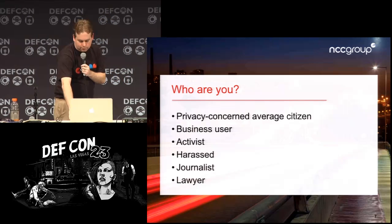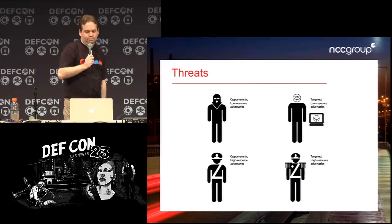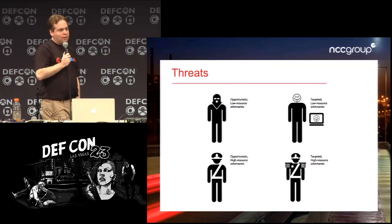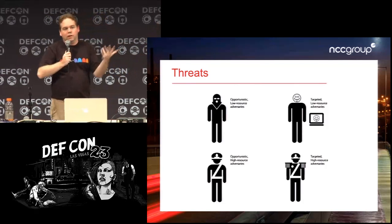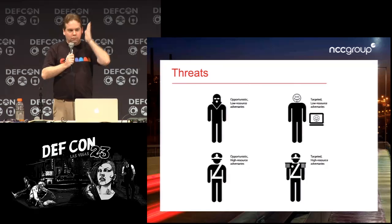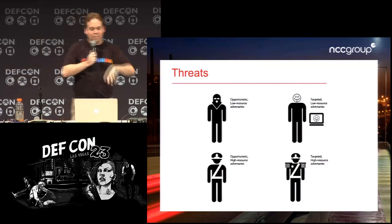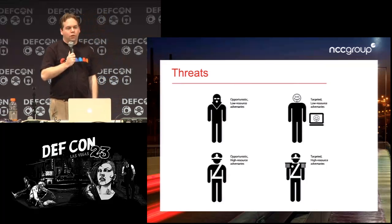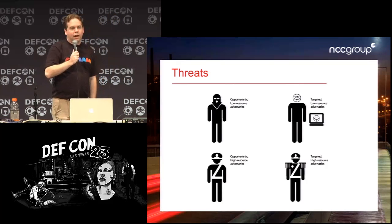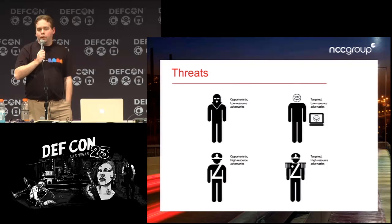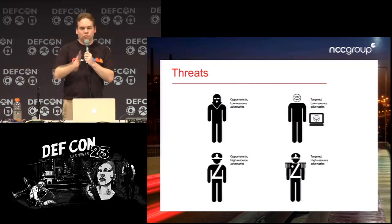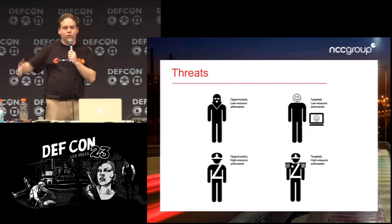Once we know who you are, we can talk about who's out to listen to your stuff. We divide threats into two axes. An opportunistic attacker is interested in collecting as much as possible about everybody — no particular target. A targeted attacker already knows they're after a specific person. The other axis is resources: a low-resource attacker might be a single hacker or small group, while a high-resource attacker might be a large company or a government. These different attacker types have different means available.